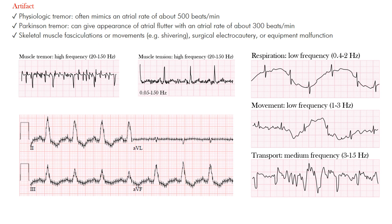So here we're talking about artifact. You may notice from the coding reference guide that there aren't many examples there — I've added more here and I can upload them to the site when I get a moment. Artifact is pretty much anything that's not intrinsic to the body — something outside of the body or something we're doing that's artificially impairing the signal we're receiving.